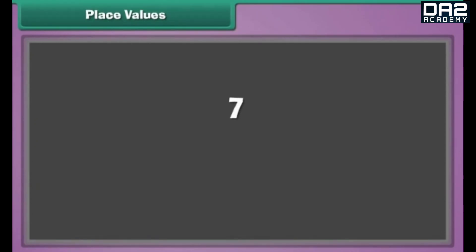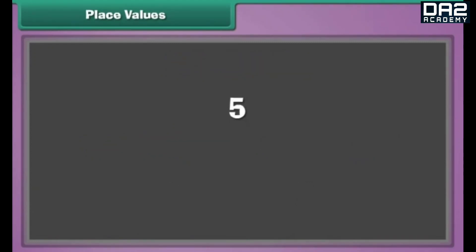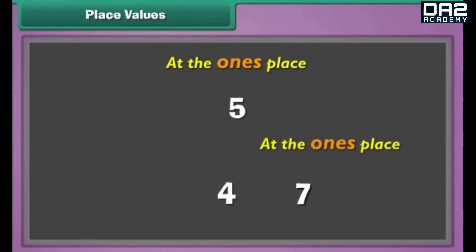Place values. Single-digit numbers have only one digit at the ones place. Two-digit numbers have one digit at the ones place and another at the tens place. Number five has only one digit, five, and it is at the ones place. Number forty-seven has two digits, four and seven. Seven is at the ones place and four is at the tens place.